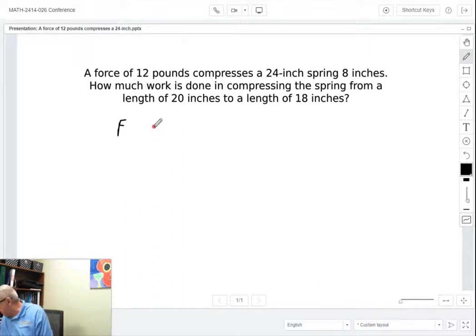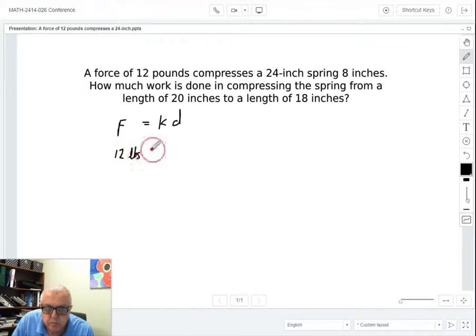So first we're going to use Hooke's law. F equals KD. The force is 12 pounds and we're looking for the constant K. D is the amount that is actually compressed and it's 8 inches compressed. So if I take the 8 to the other side by dividing by 8, K ends up equaling 12 over 8 which is 1.5.